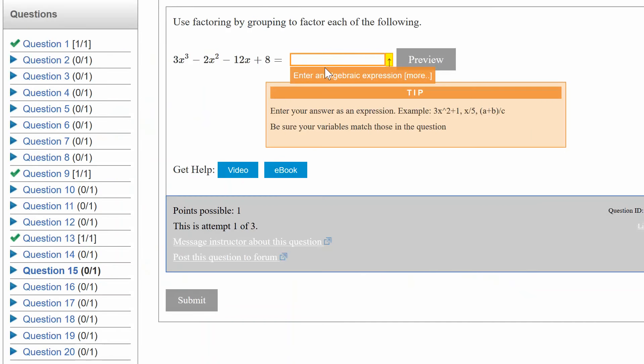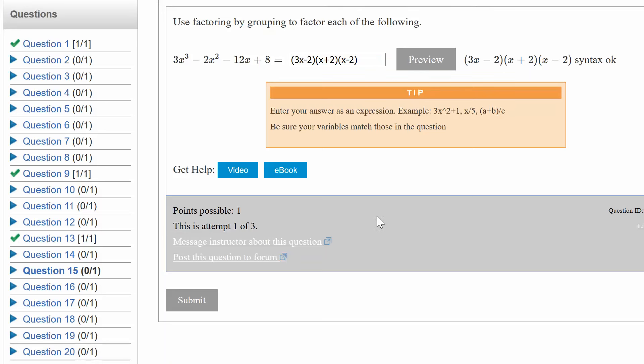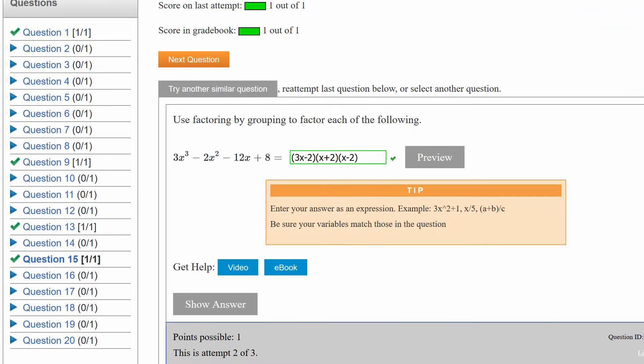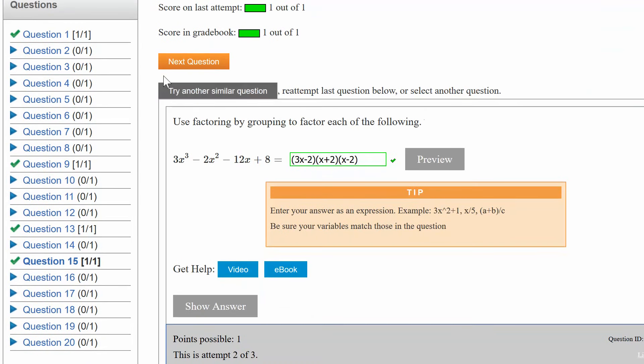Inputting this here. 3x minus 2, x plus 2, let me put in the plus sign the way it's supposed to be, and x minus 2. Let's see if I get them all correct. I'm going to click the preview button just to make sure our syntax is okay. And let's submit it. Yes, I'm good to go. I am 4 for 4.